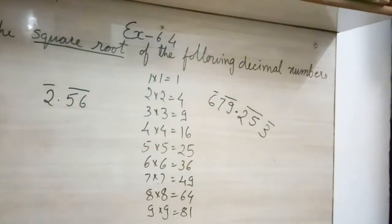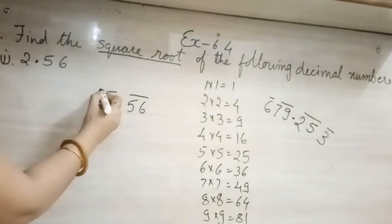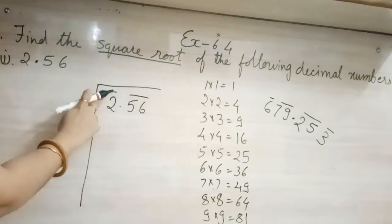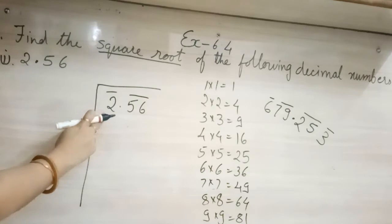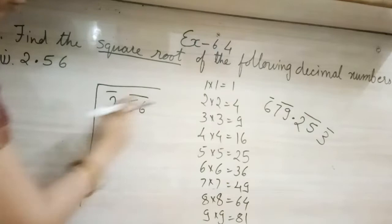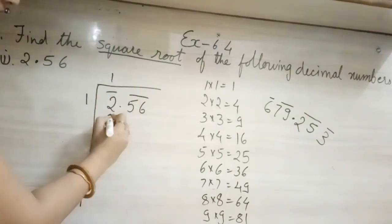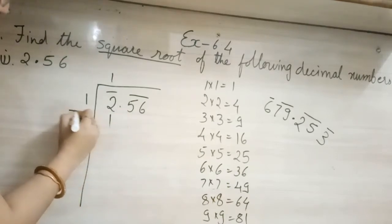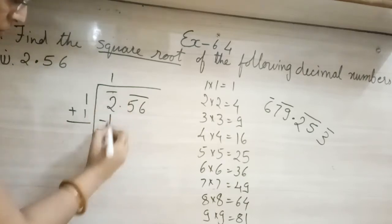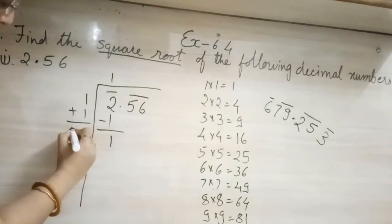Once you have kept the bar, then we will start solving. So method will be same. We will see for a perfect square. 2 times 2 is 4. So 1 times 1, so it will come 1. 1 or 1 will come and you will add by 1 only. We will subtract. 2 minus 1 will be 1. Here 1 plus 1 will become 2.